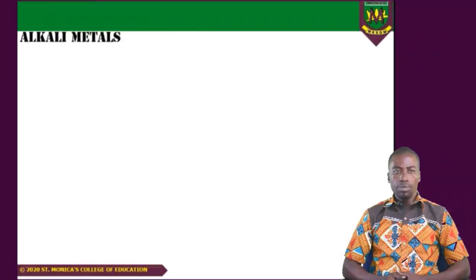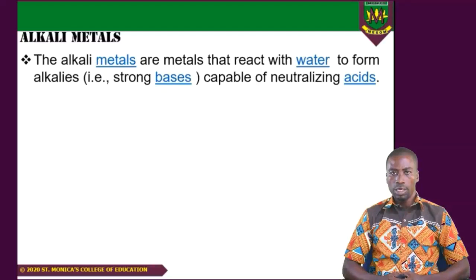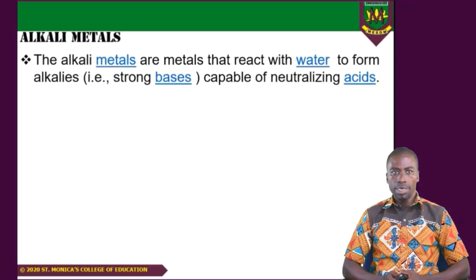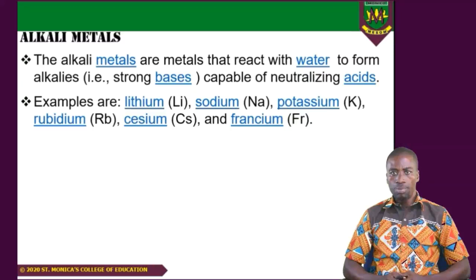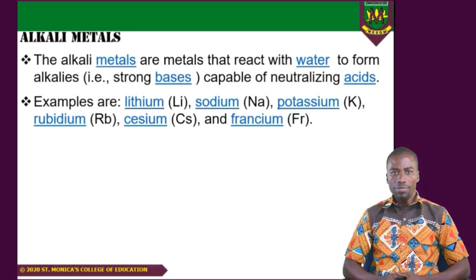On the periodic table we have what we call the alkali metals. These are metals or elements that can react with water to form strong bases. And these strong bases have the ability to react with acid to form salt and water in a process called neutralization. We will look at neutralization reaction in future times. These metals include lithium, sodium, potassium for the first 20 elements. And beyond that we have rubidium, cesium, and francium. These are our Group 1 elements — what we call the alkali metals.